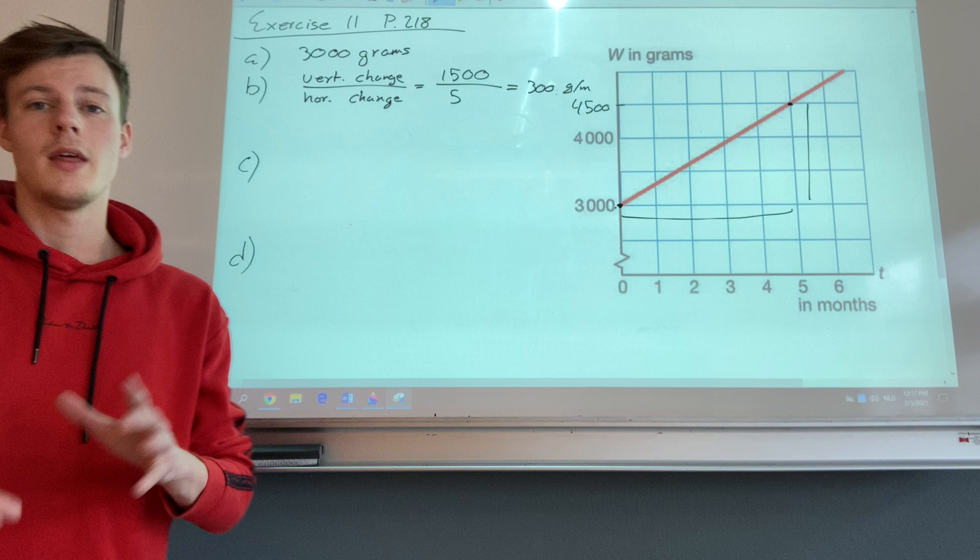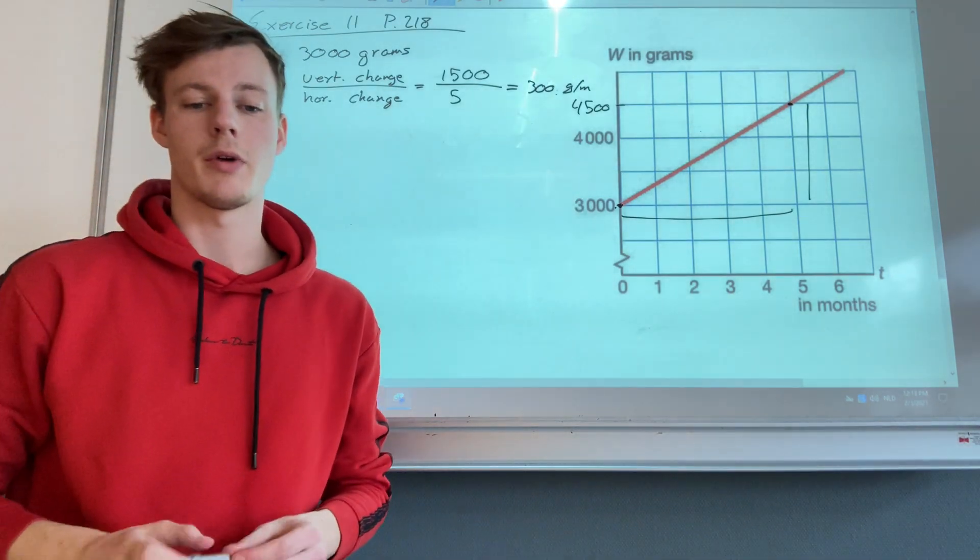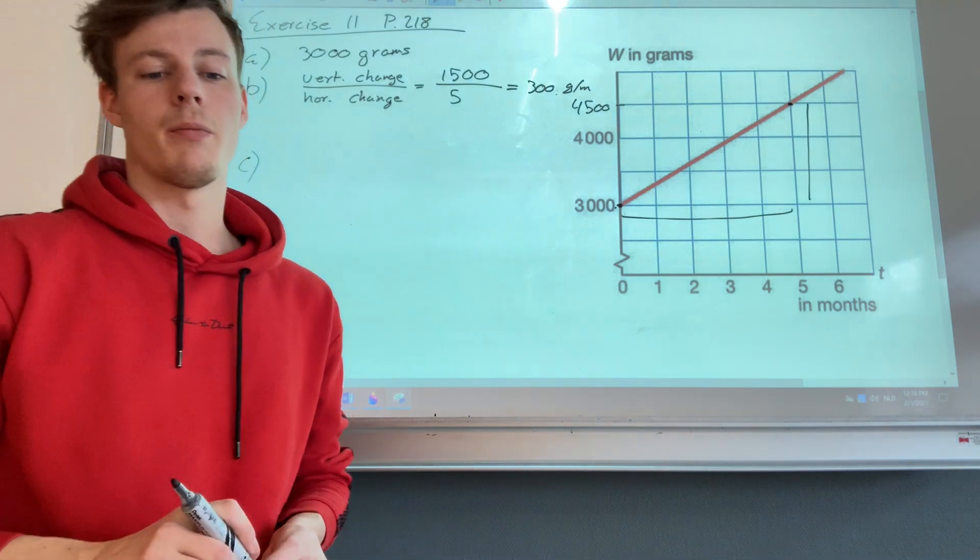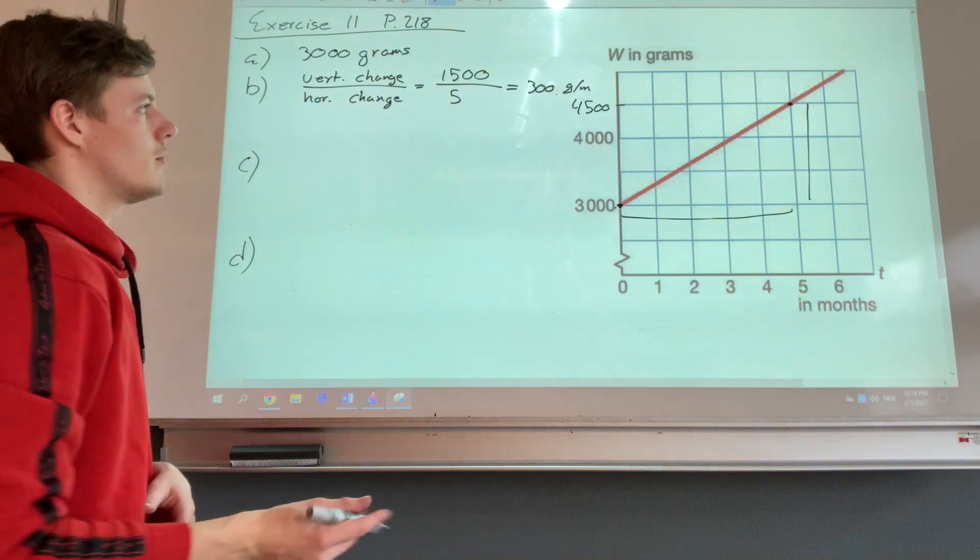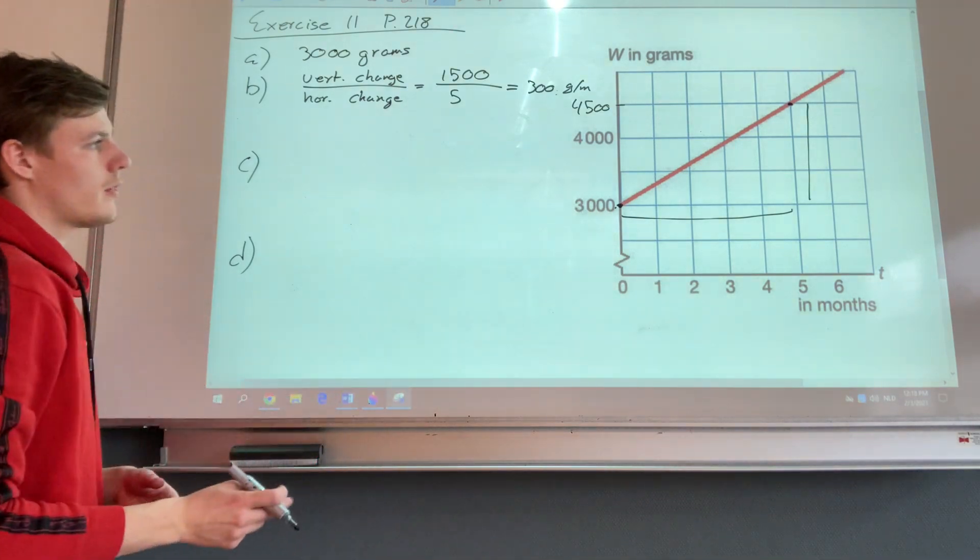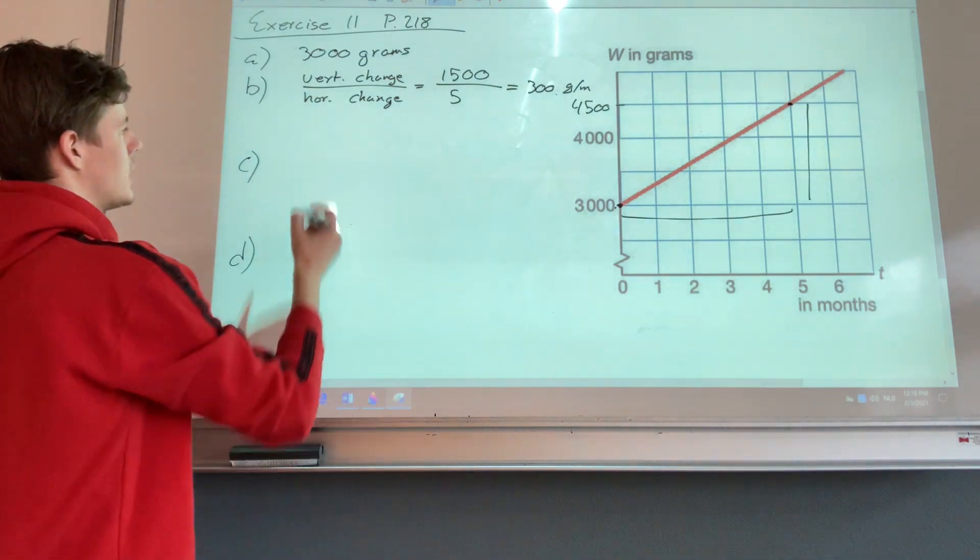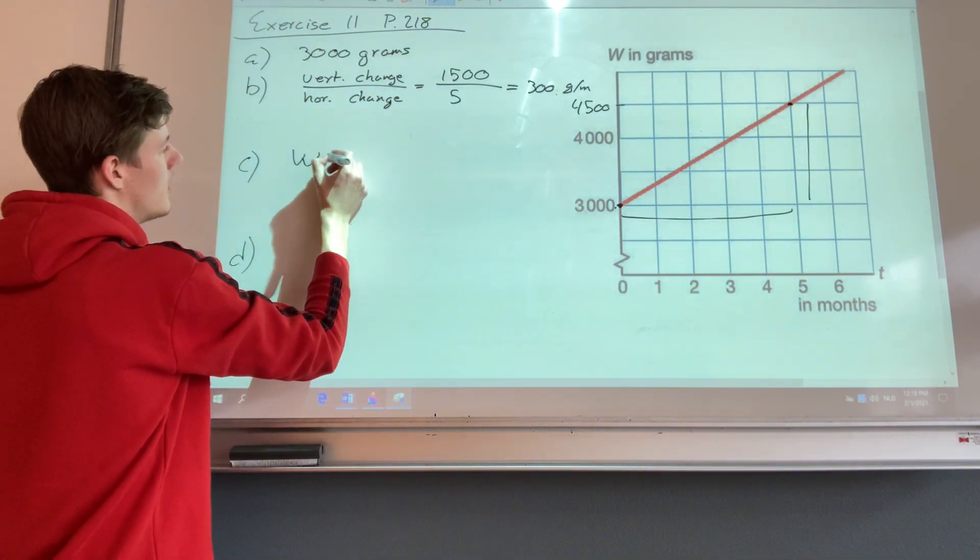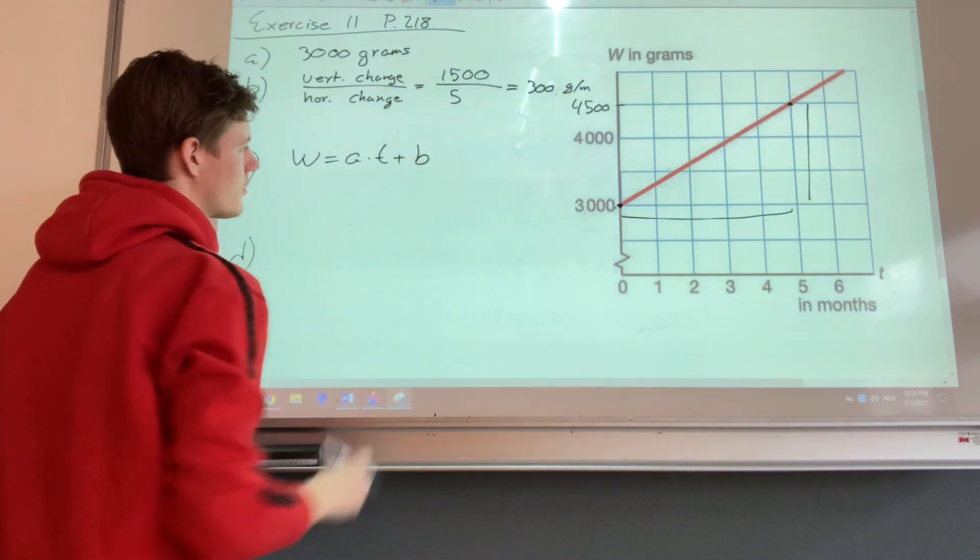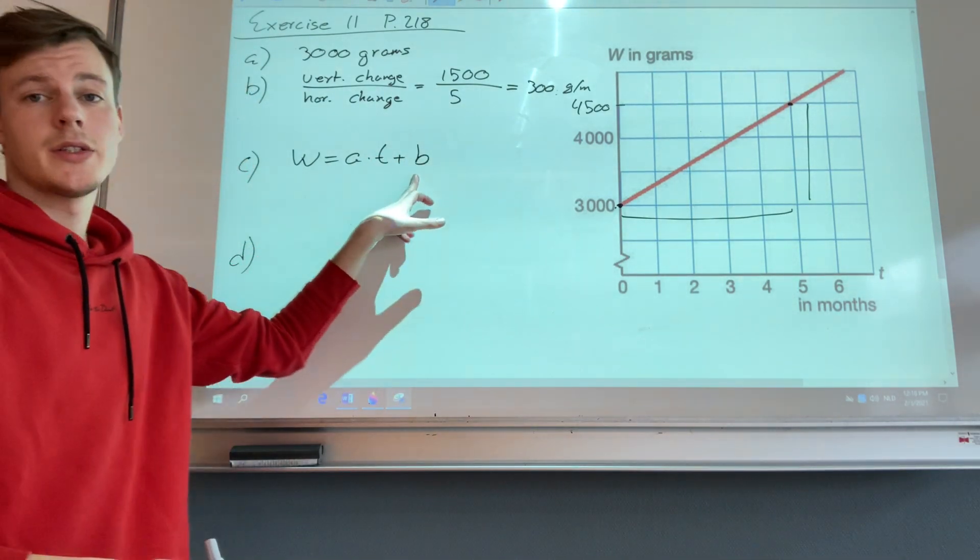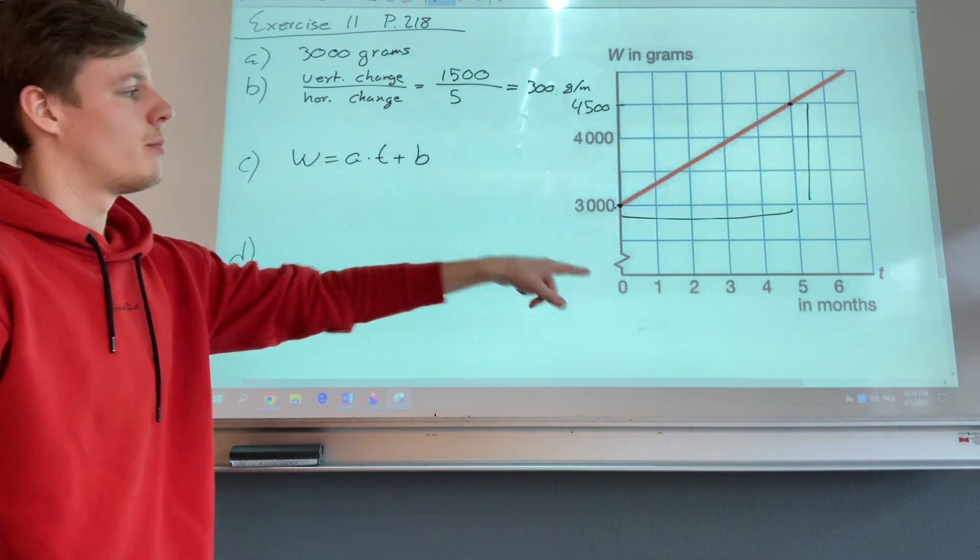Alright, then we have question C. Generate a formula for Maureen's birth weight and take w in grams and the time t in months. Alright, well we know that this is a straight line so the formula would look like this: we have w equals a times t plus b, where b is the y-intercept and a is the change per month.